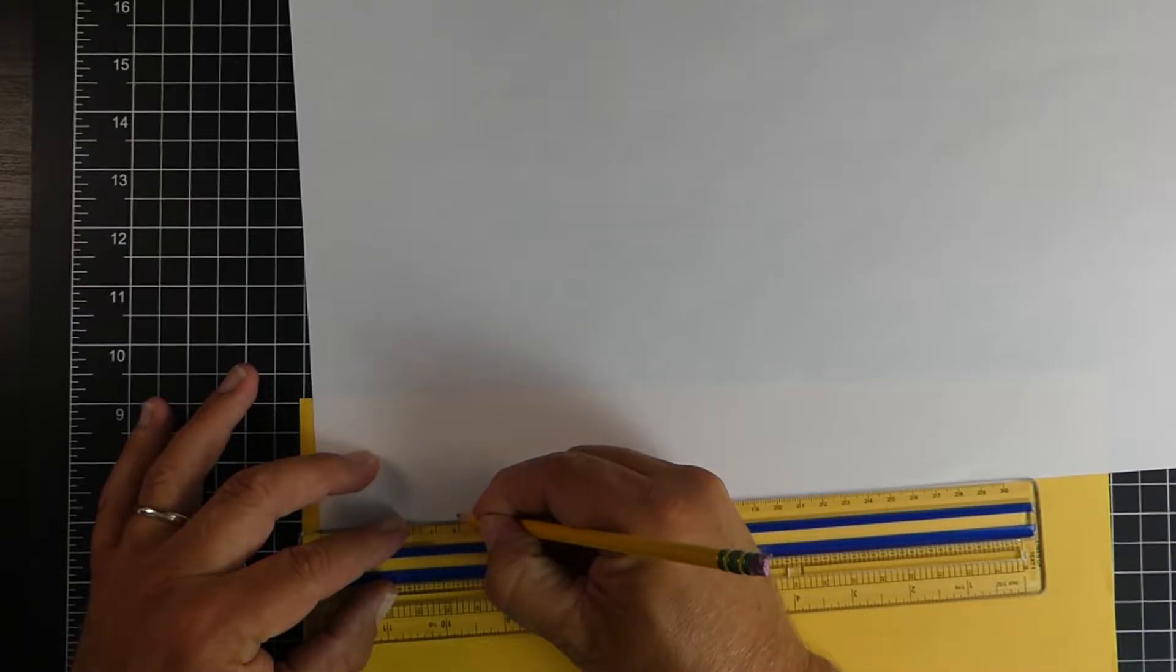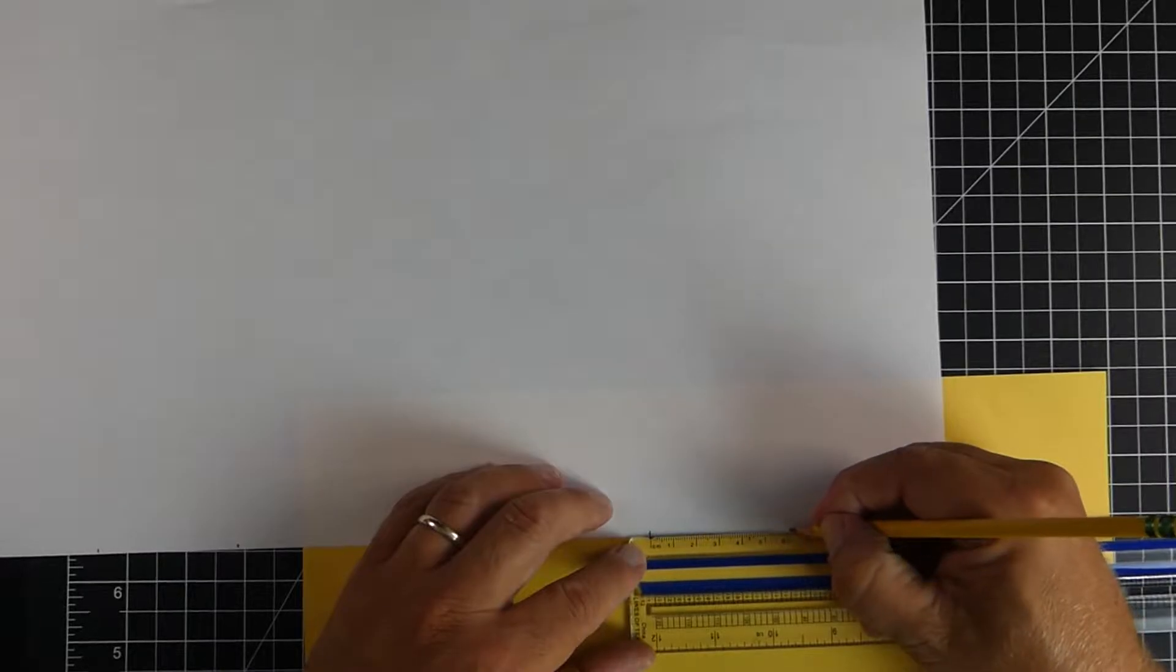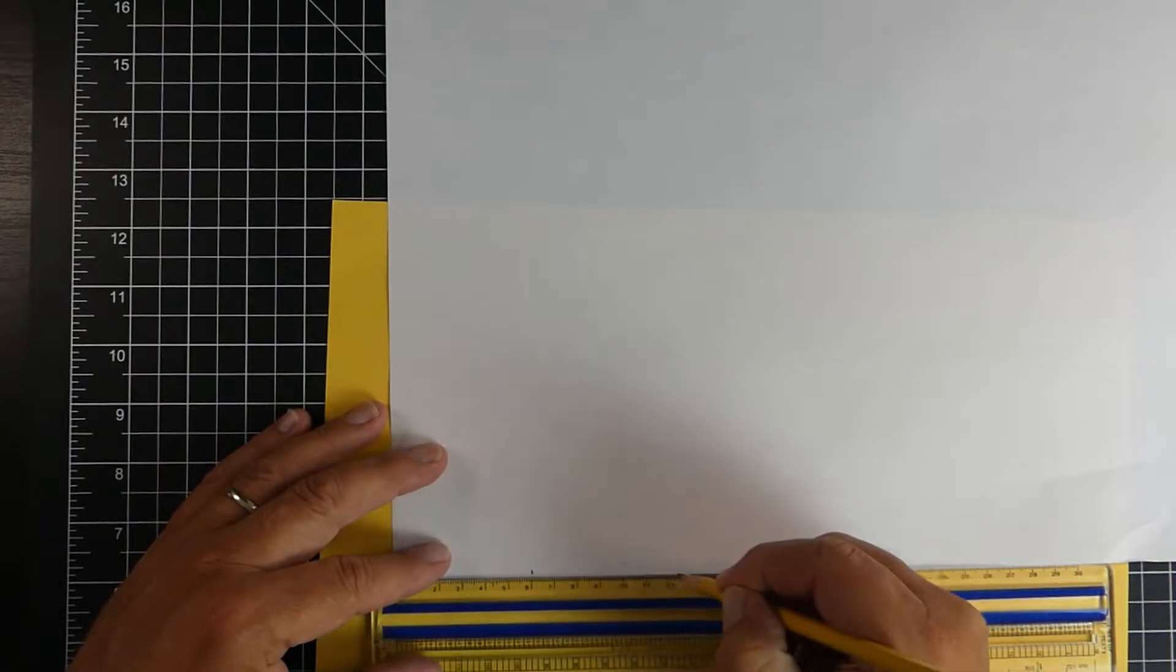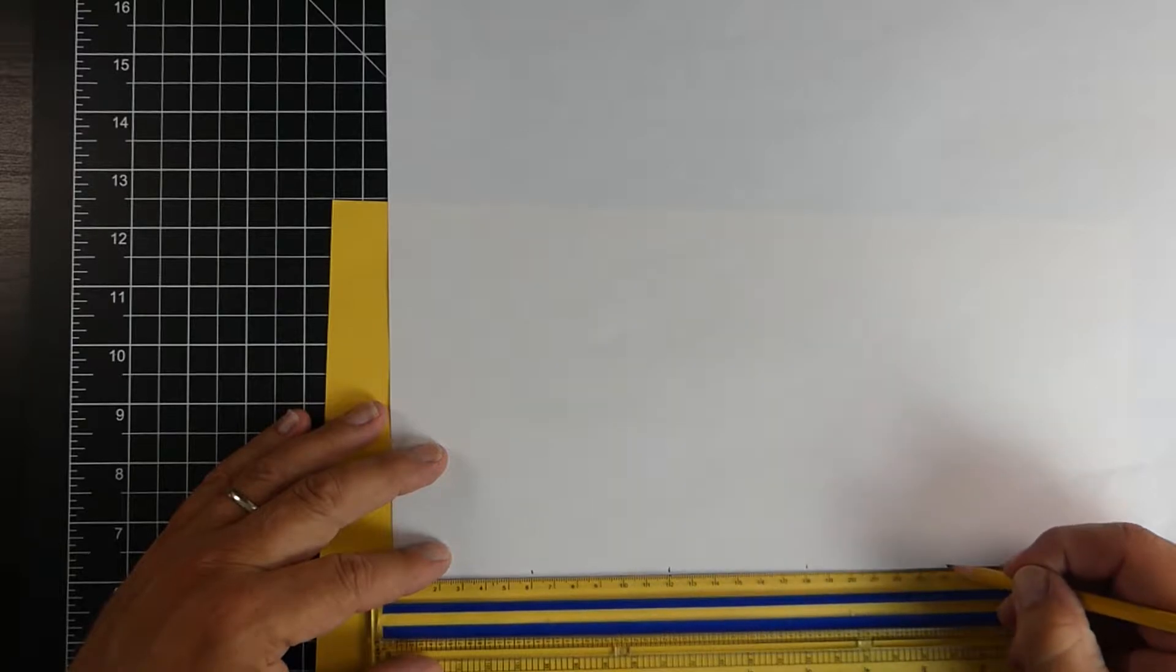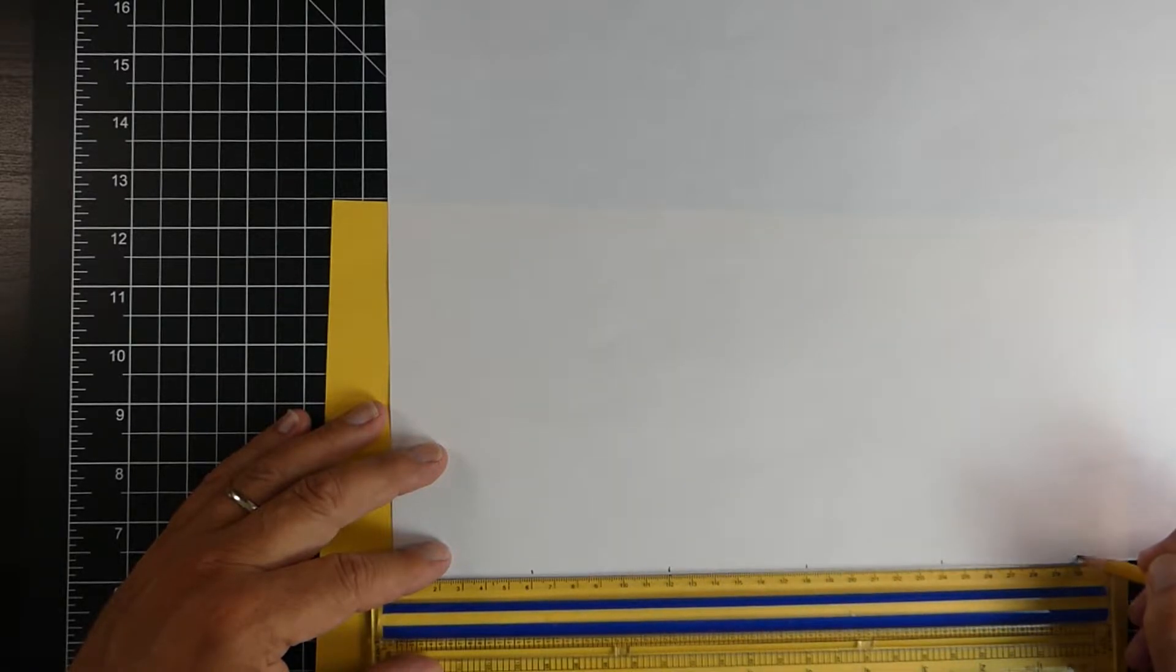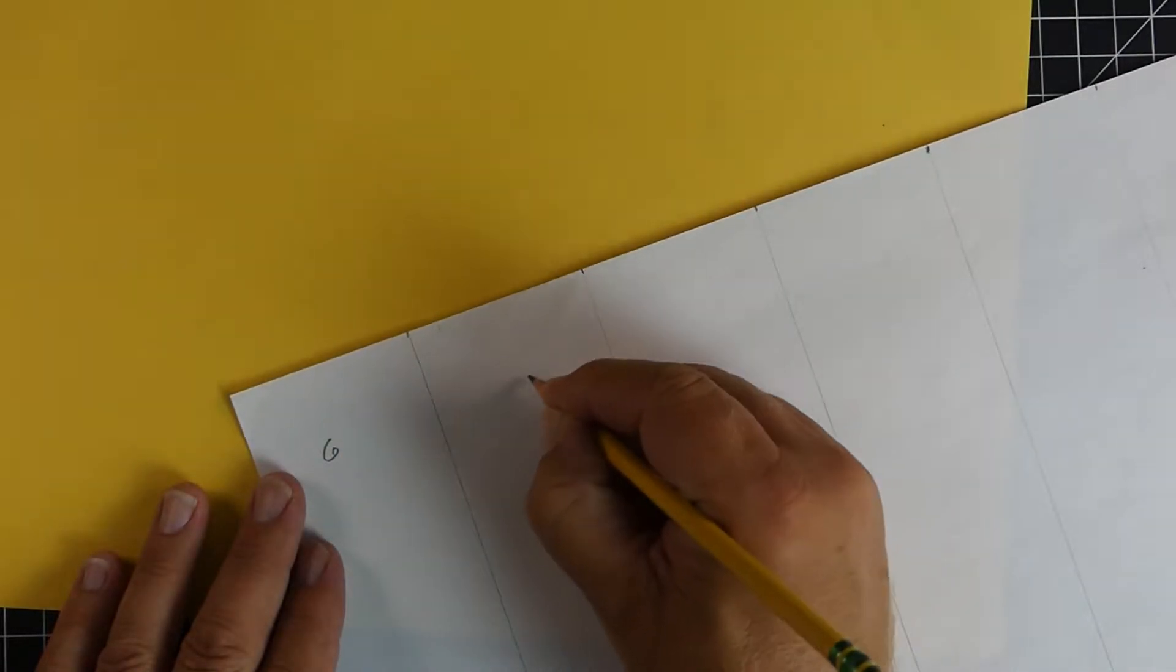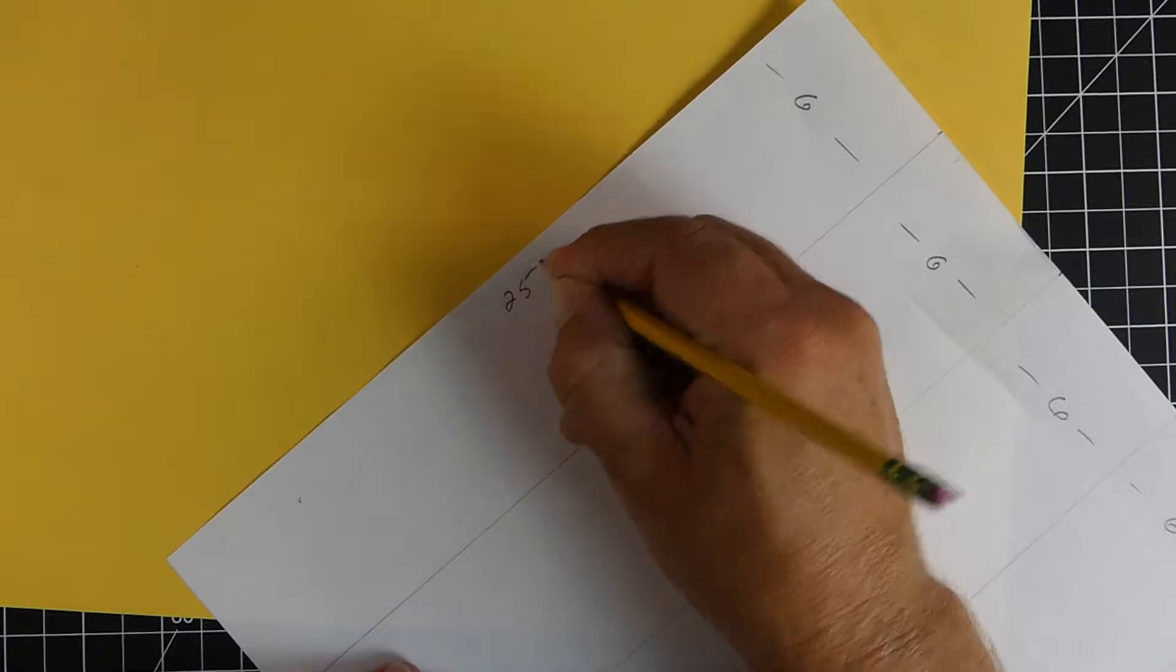Our next step is to build a prototype. This is a practice version of what we're ultimately going to do. On this one, I'm measuring off every six centimeters. I'm doing it on both sides of the paper. We're going to connect all these lines together, all these points together. And it's going to give me six rectangles, which will represent the size of our hexagonal prism. Then I'm going to measure off 25 centimeters off the side.